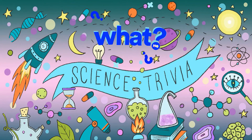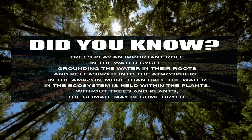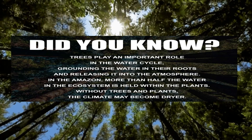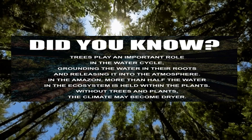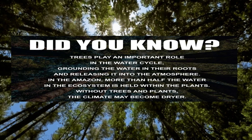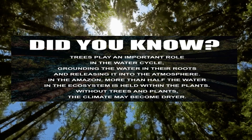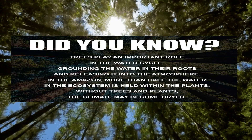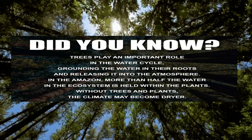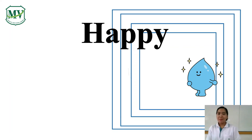It's trivia time! Did you know that trees play an important role in the water cycle, grounding the water in the roots and releasing it into the atmosphere? In the Amazon, more than half the water in the ecosystem is held within the plants. Without the trees and plants, the climate may become drier. That's all for today, students of Mary Beth Education Center. Thank you for listening and happy learning! Bye!